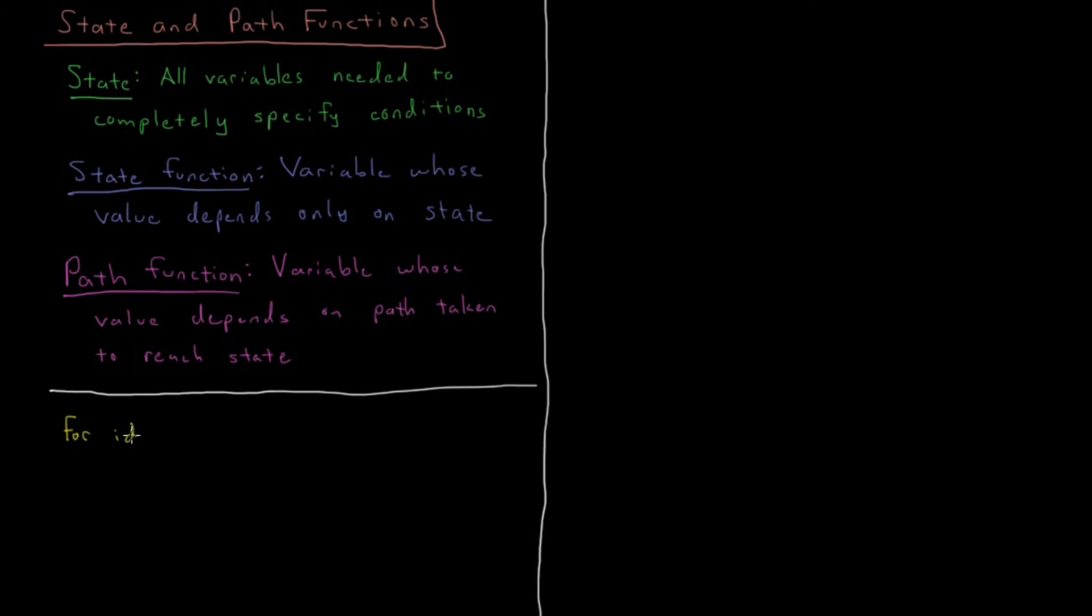if we have an ideal gas, we know that for an ideal gas PV equals NRT, and that's called an equation of state because if you know at least three out of these four variables—P, V, N, and T—then you can calculate the fourth, and any other property of that system you're interested in.